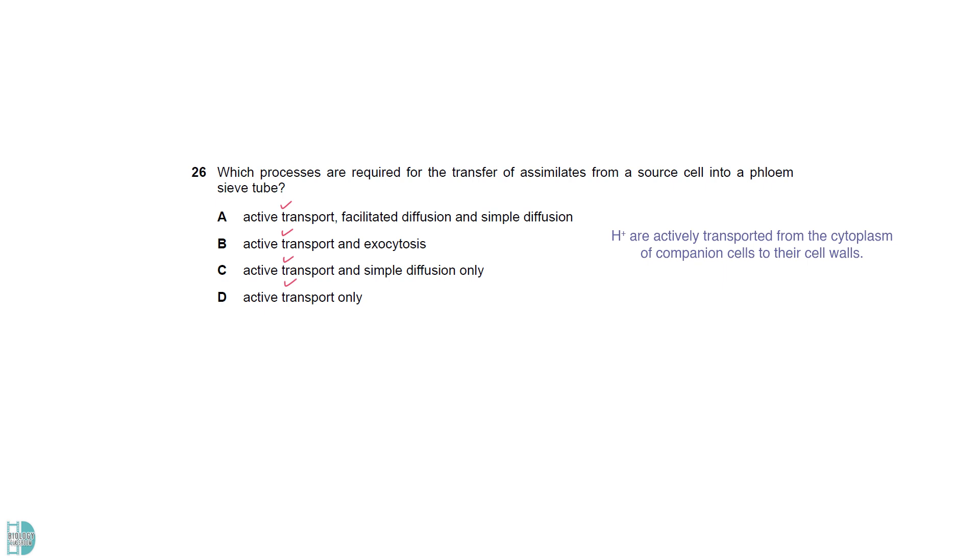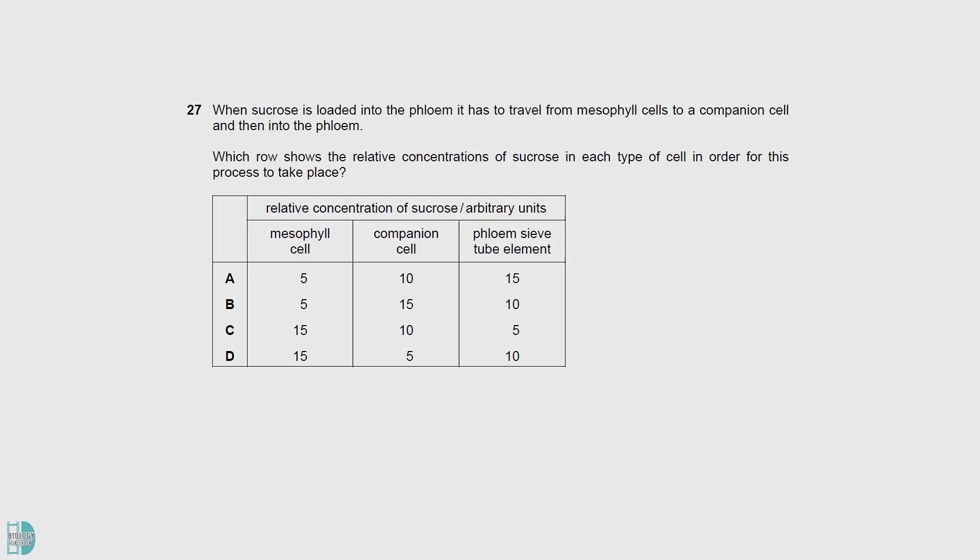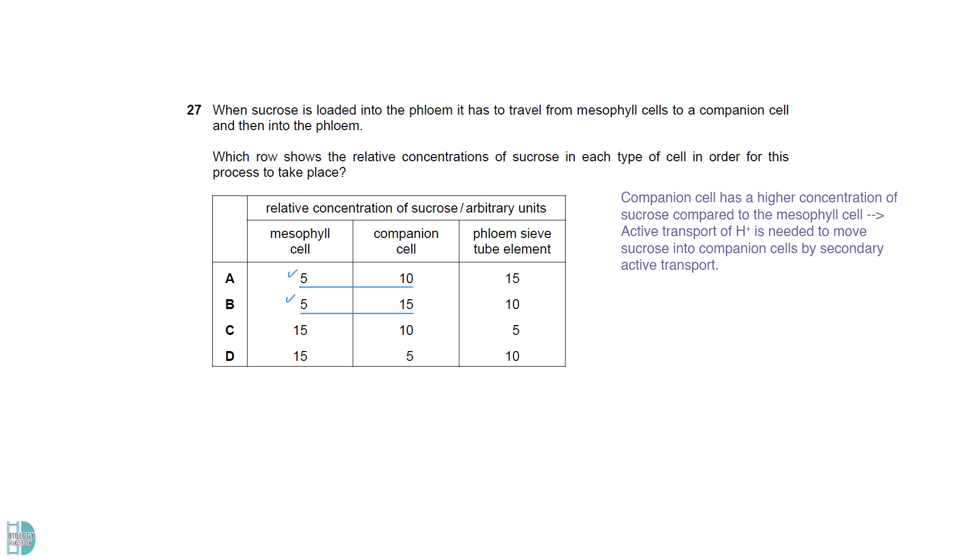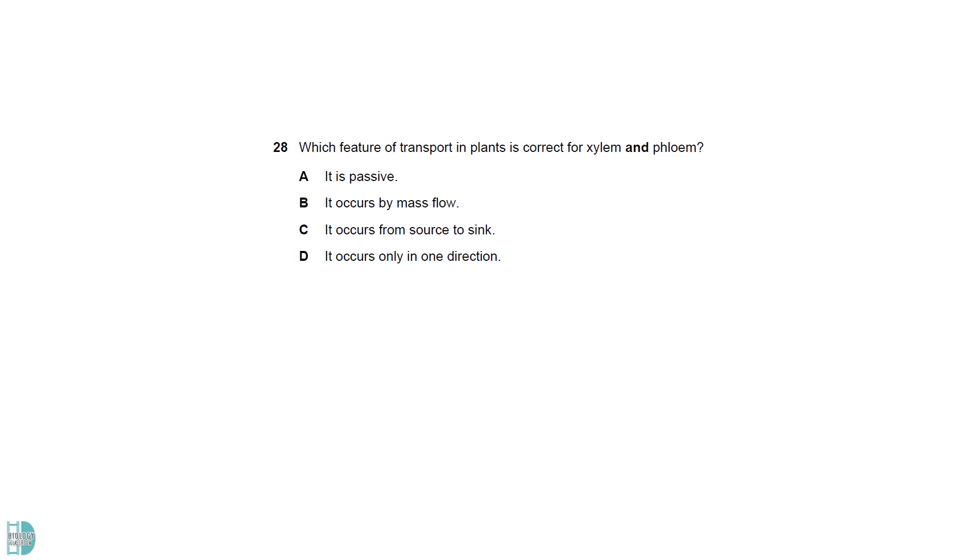Protons are actively transported from the cytoplasm of companion cells to their cell walls. Assimilates will then be co-transported into the cell, using a co-transporter protein. This is facilitated diffusion. Then assimilates diffuse into the sieve tube elements via plasmodesmata. Companion cell has a higher concentration of sucrose compared to the mesophyll cell. This is why the active transport of protons is needed to move sucrose by secondary active transport. It also has a higher concentration compared to the sieve tube elements. That is why sucrose can diffuse passively through the plasmodesmata.